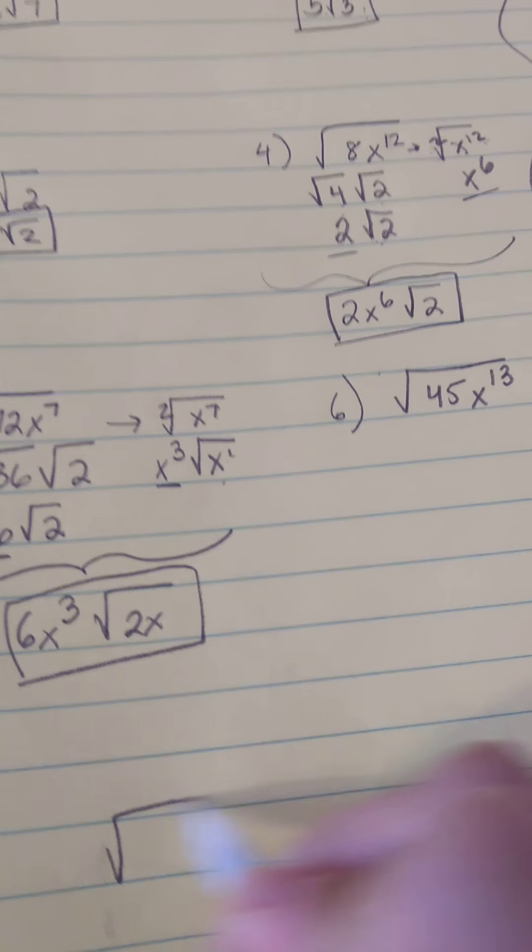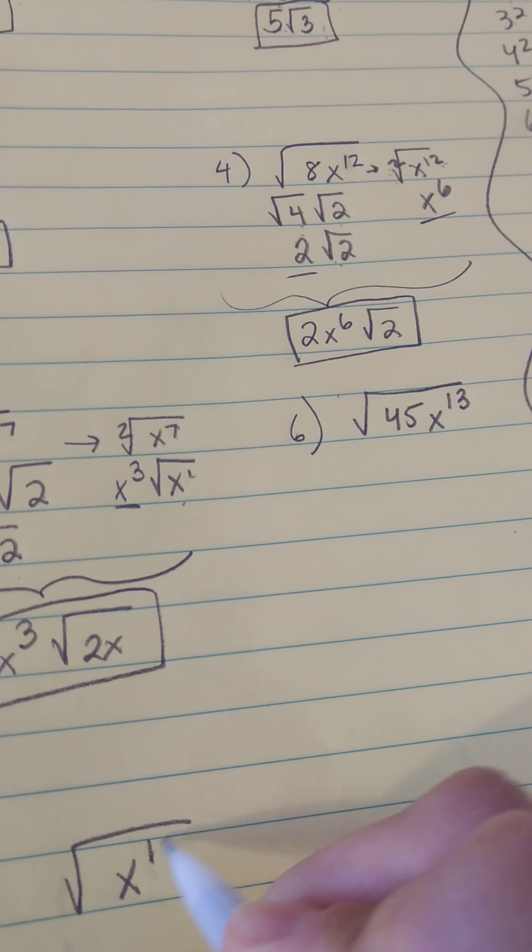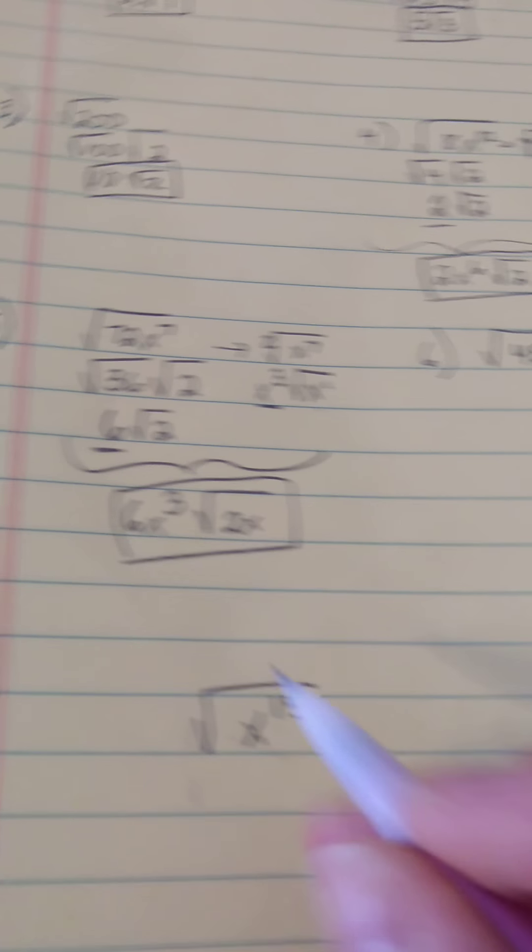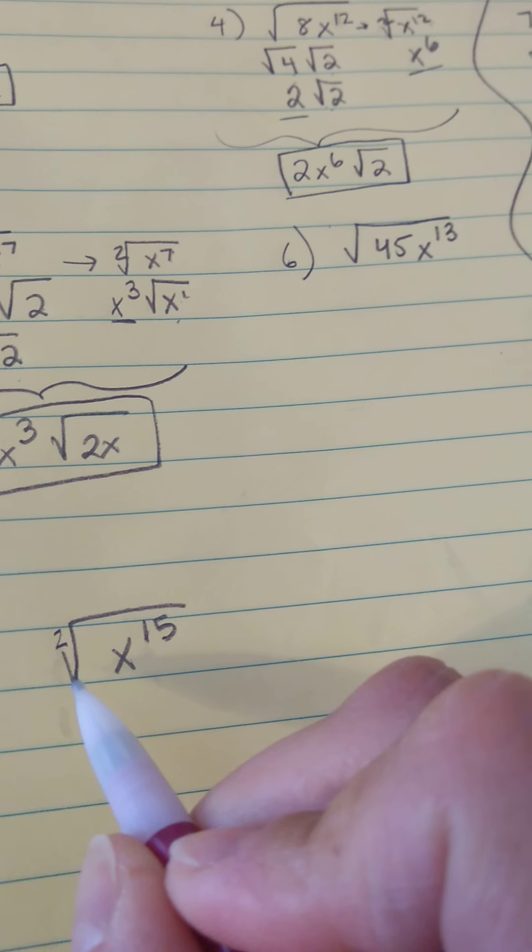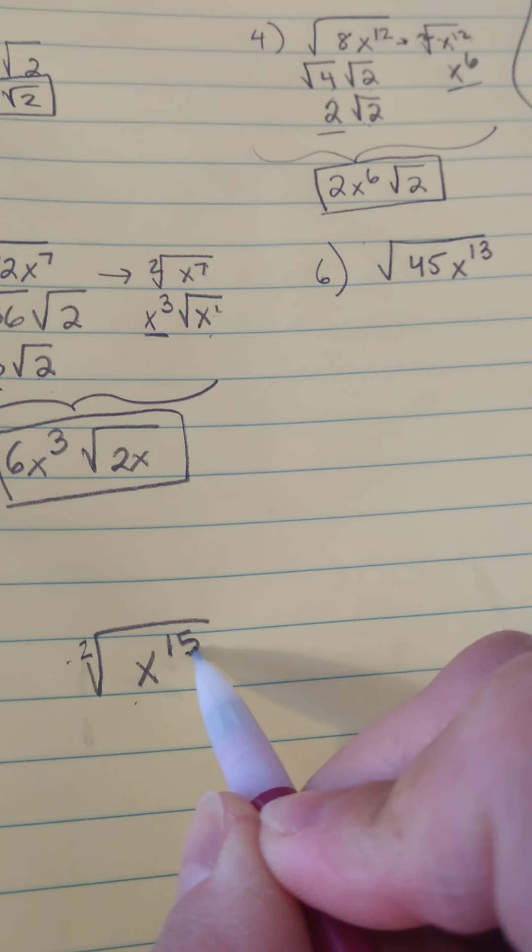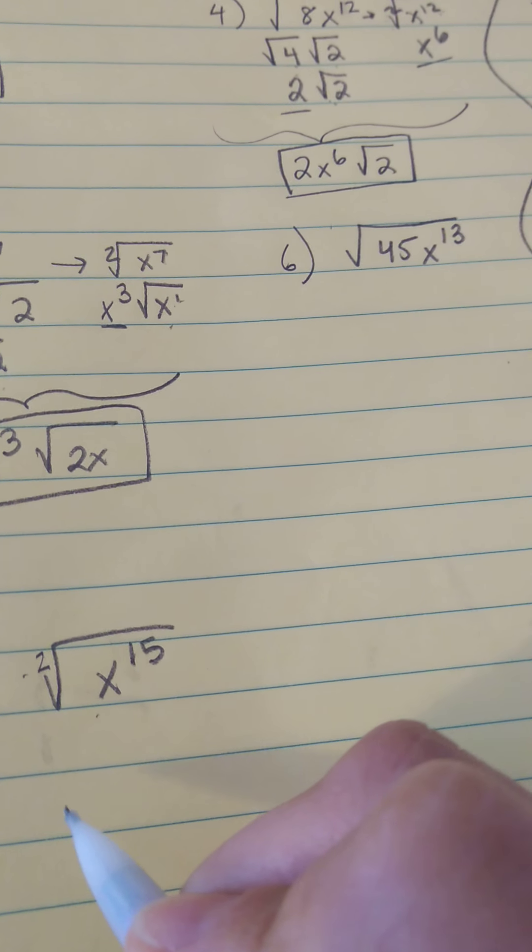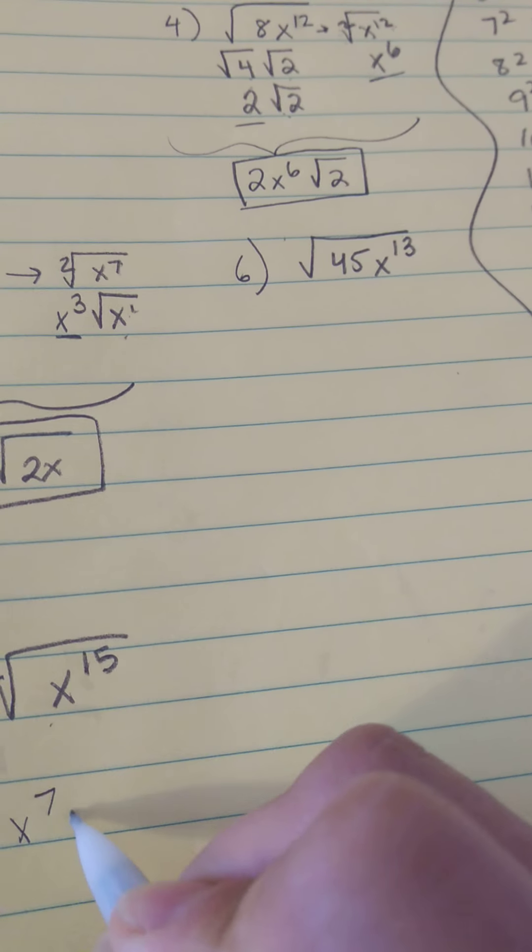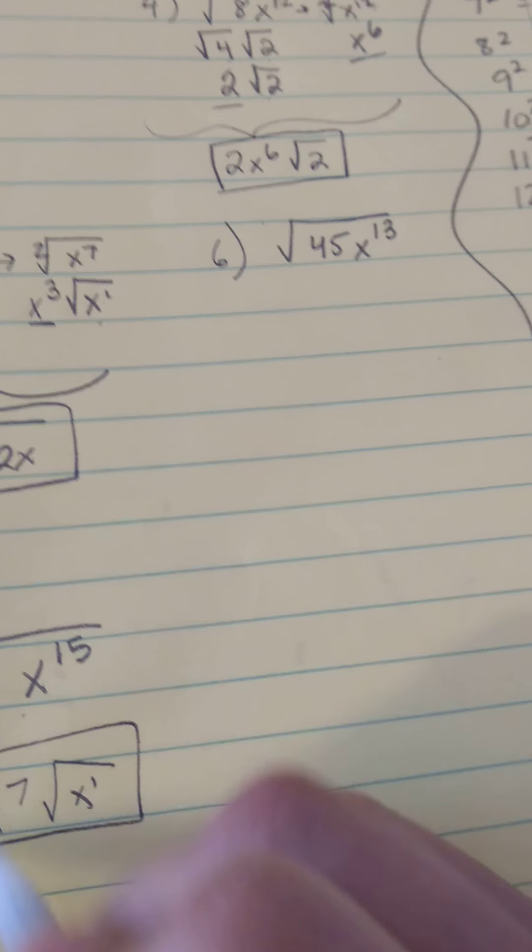Do you need practice for another one? So like x to the 15th. Take the square root of x to the 15th. So 2 divides into 15 how many times evenly? Correct, 7 times, with a remainder of 1. So that's your answer there.